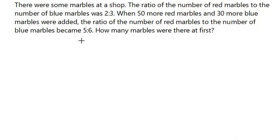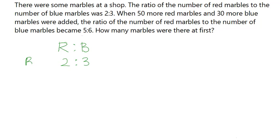So there are two types of marbles — red and blue. The ratio of red marbles to blue marbles is 2 is to 3. This is the situation before, or at first. So I'm going to call the units used to represent the red and blue marbles as 'before units.'